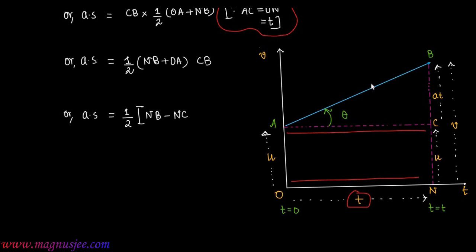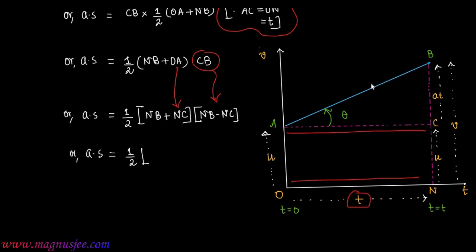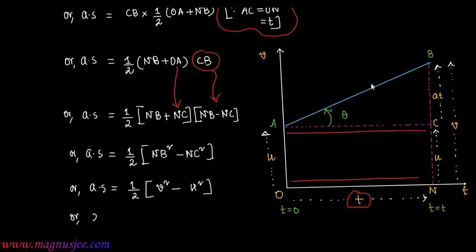Substituting, a·s = ½(NB + NC)(NB − NC) = ½(NB² − NC²). Replacing NB with v and NC with u, we get a·s = ½(v² − u²).